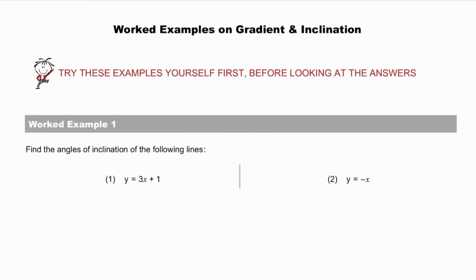Now, some worked examples on gradient and inclination. Try these examples yourself first before looking at the answers. Worked example 1: Given the equations of two lines, find the angles of inclination. Pause while you do so.